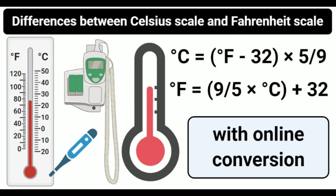The freezing point of water, or melting point of ice, in the Celsius scale is 0°C — it is the lower fixed point of the scale. The freezing point of water in the Fahrenheit scale is 32°F — also the lower fixed point. The boiling point of water in the Celsius scale is 100°C, the upper fixed point. On the Fahrenheit scale, the boiling point of water is 212°F, also the upper fixed point.